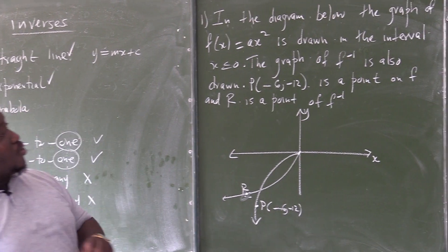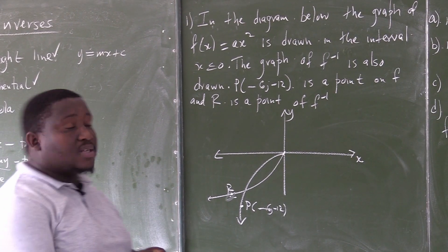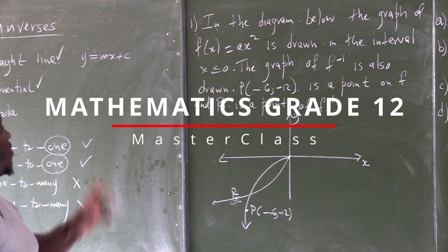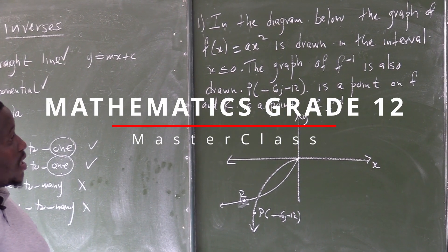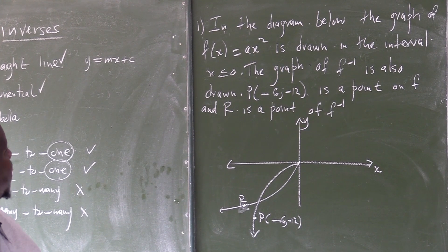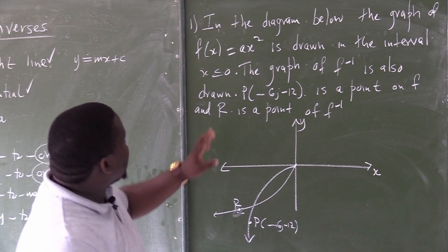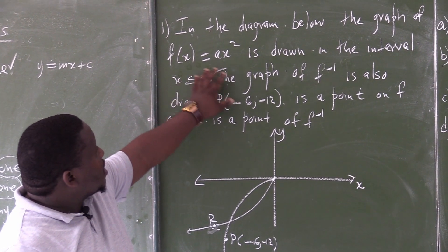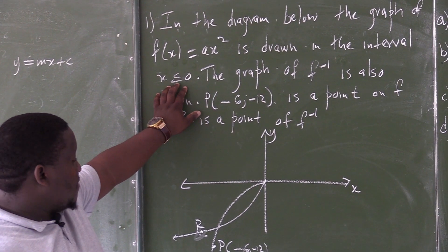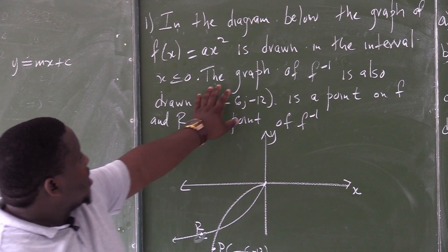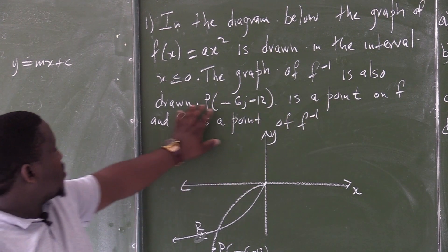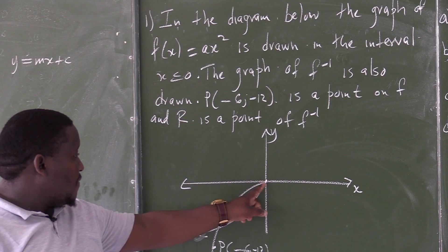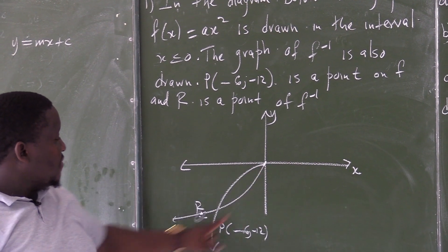Okay, now I want us to look at this question and this is one of the questions that came out in one of the years. I think it was 2018. So here we are told that the graph that is drawn is the graph of f(x) in the interval. Now they are giving us the interval, right? Instead, the graph of the inverse is also drawn.